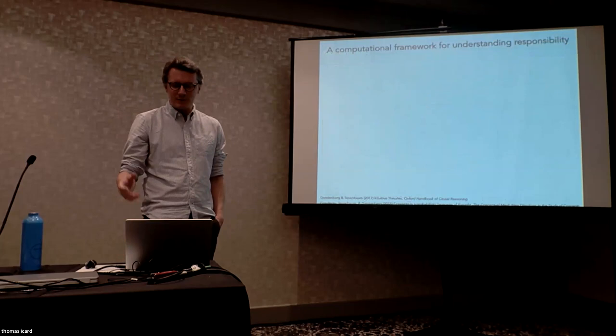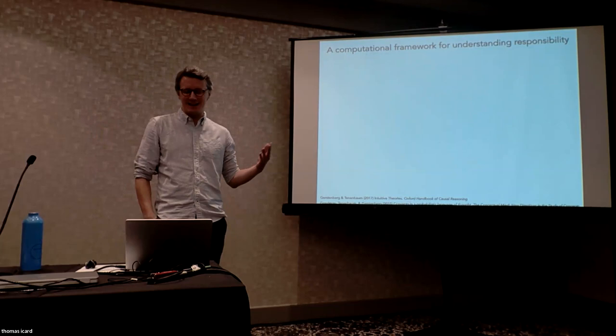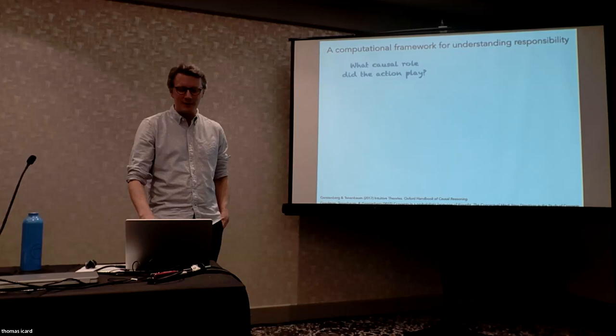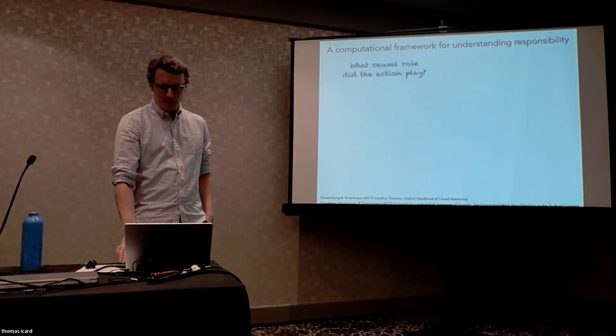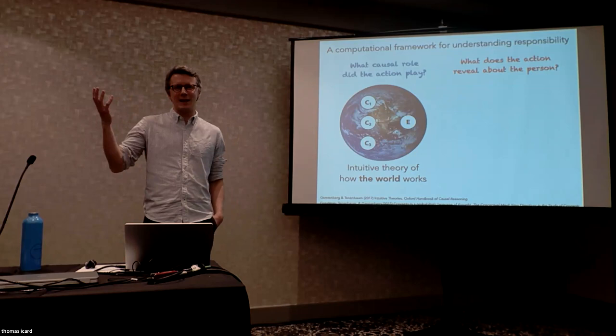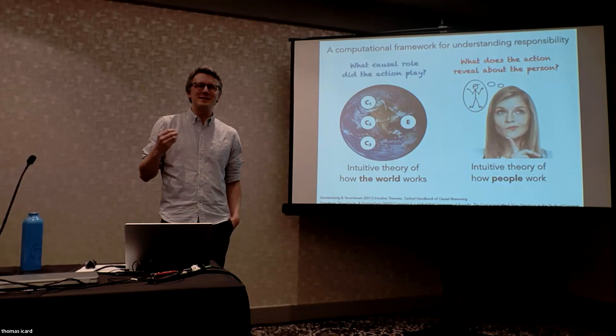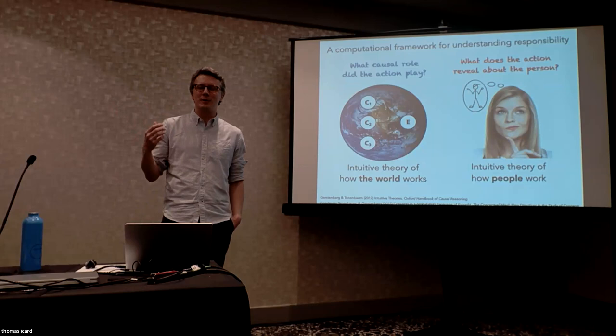Assigning responsibility is really one of the unifying themes my lab is working toward, with a higher-level goal of developing a computational framework for understanding how people assign responsibility. To get there, we have to answer at least two questions: one being what causal role somebody's action played in bringing about the outcome, and the other being what we can learn about the person from having observed their action. We need an intuitive theory of how the world works, and an intuitive theory of how people work — to reason backwards from observed actions to mental states: whether they believed, whether they intended, what their capacities were.